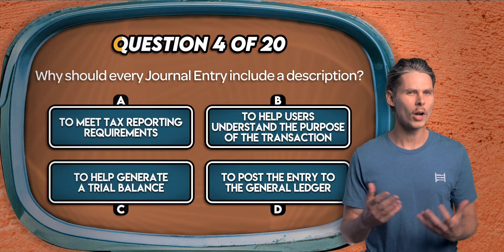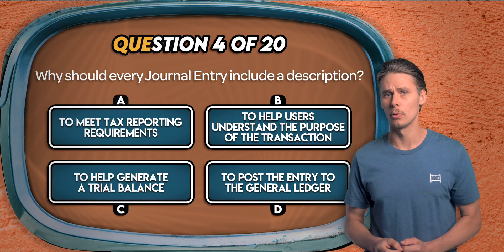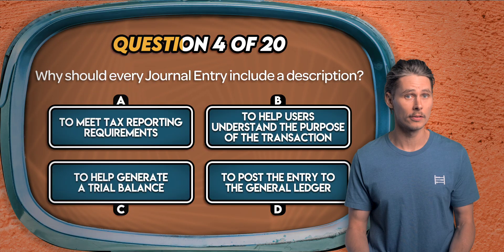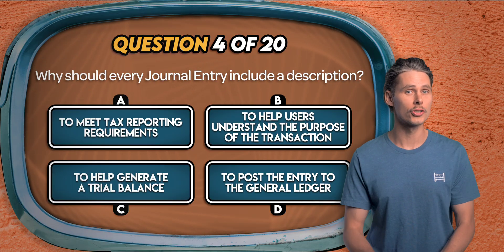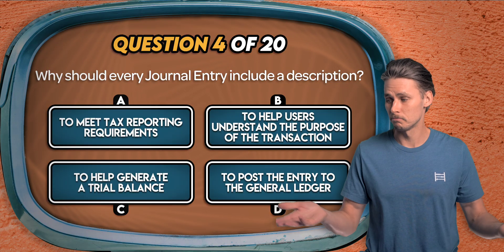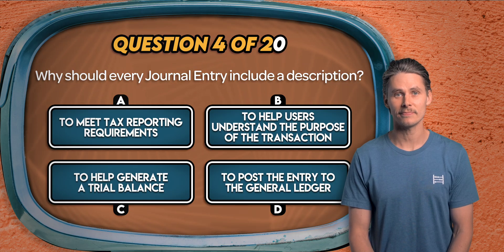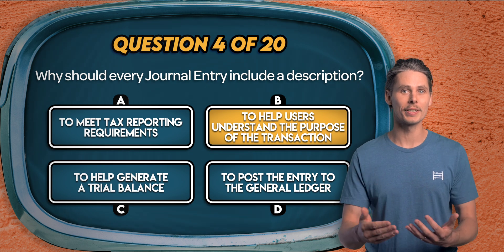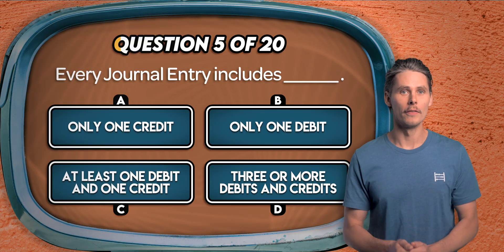Question 4. Why should every journal entry include a description? Is it to meet tax reporting requirements? It's B. Journal descriptions give context and improve the audit trail by explaining why the journal was posted.